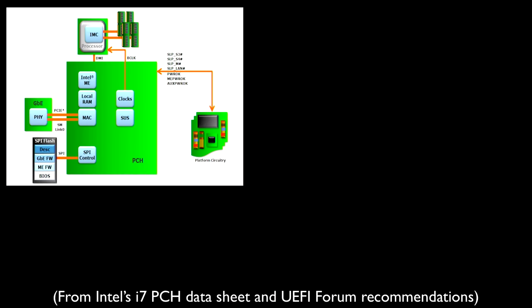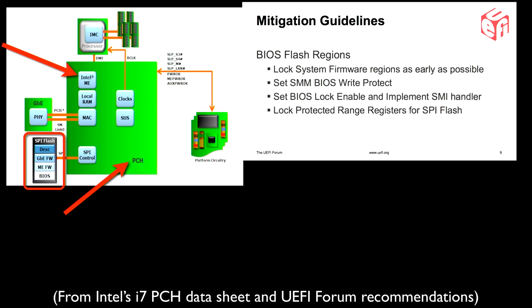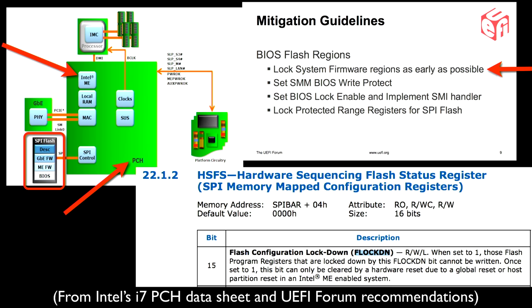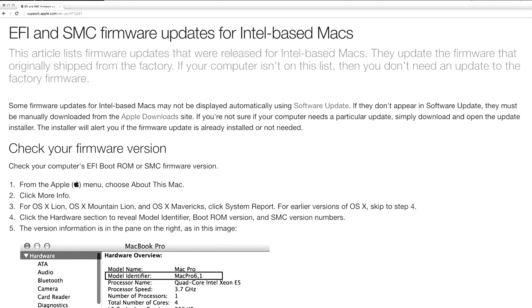So why can't we write to the bootrom flash from software? Why do we still have to use this hardware programmer? It turns out the flash is not directly connected to the CPU. The flash is actually connected to the platform controller hub, and access to it is mediated by things like the management engine. When the system boots, the UEFI forum recommends that all of these regions be locked as quickly as possible, done via registers like Flockdown that control read-write access. They can only be cleared during a hardware reset. So once the system is booted, you can't write to those parts of the ROM. But we know that Apple updates the firmware — they regularly ship EFI and SMC firmware updates that write new code into this ROM.